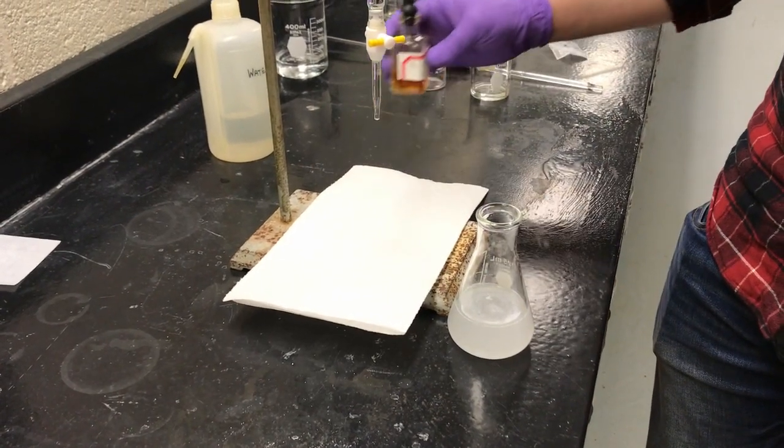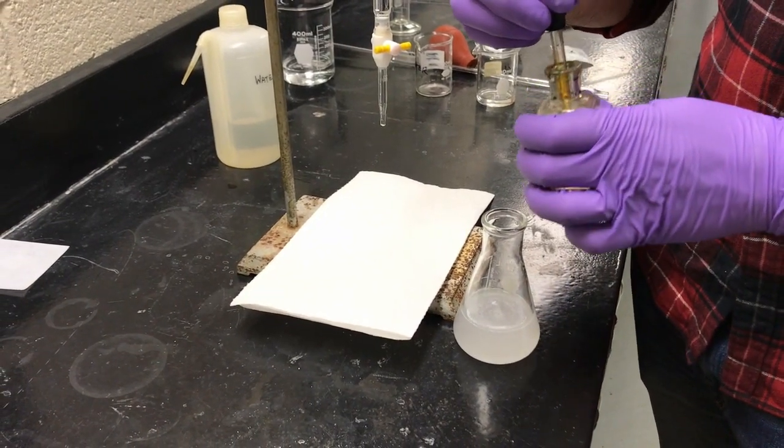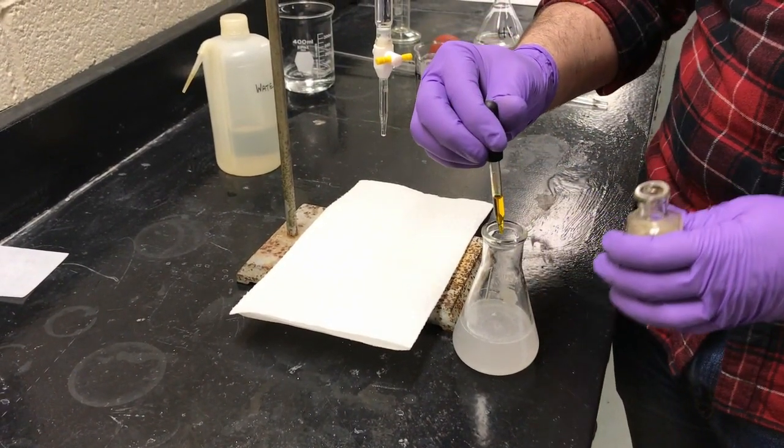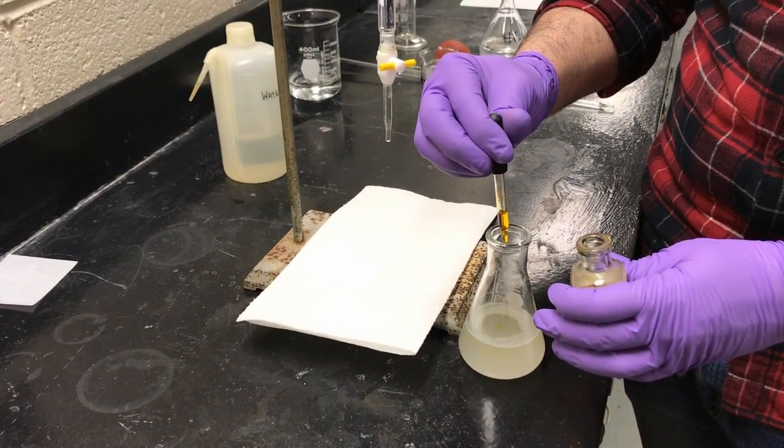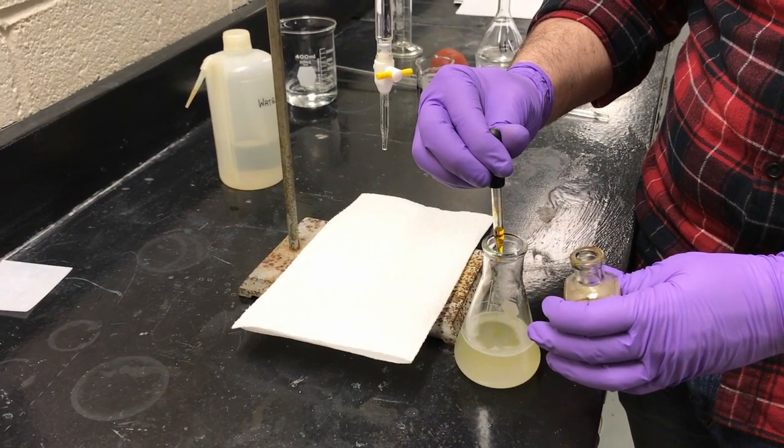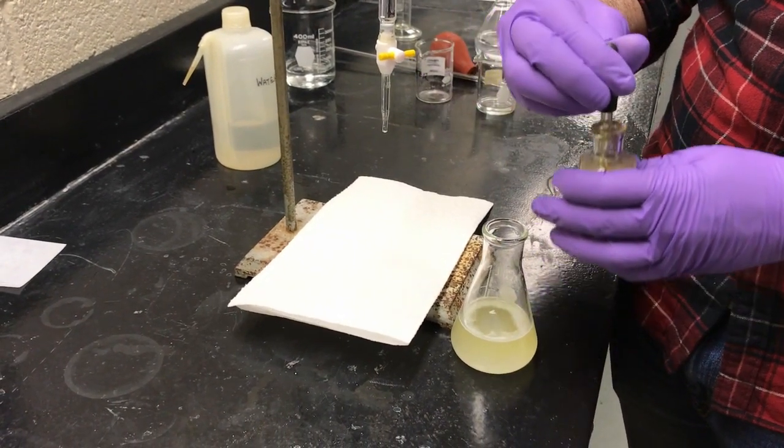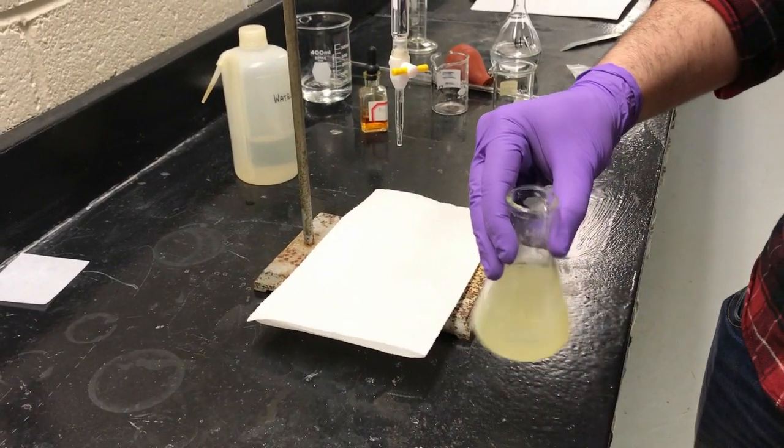So we're first going to need our indicator before we titrate. We're going to use bromothymol blue. We're going to add about 10 drops. So 1, 2, 3, 4, 5, 6, 8, 9, 10. We're going to swirl it a little bit.